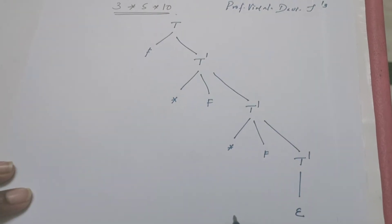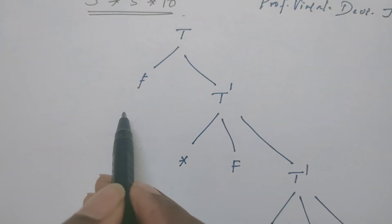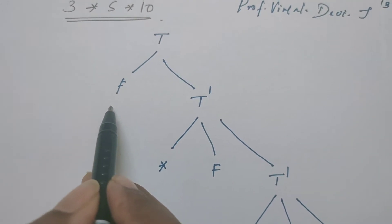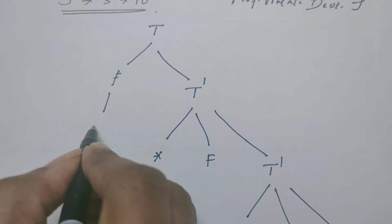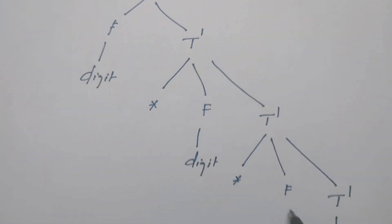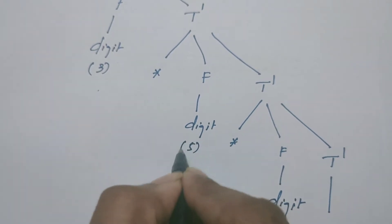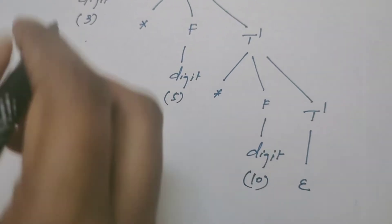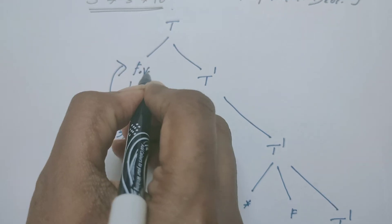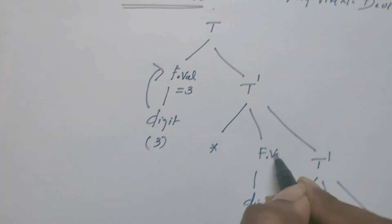We have to convert this into an annotated parse tree, and at the same time show the direction of the flow. In a parse tree, the leaf node receives the value from the lexical analysis. So F is expanded as digit, and this digit value is supplied by the lexical analyzer. The digit value here is 3. Accordingly, F takes a value — from the child node, the value flows into the root node. This means the attribute is the synthesized attribute.